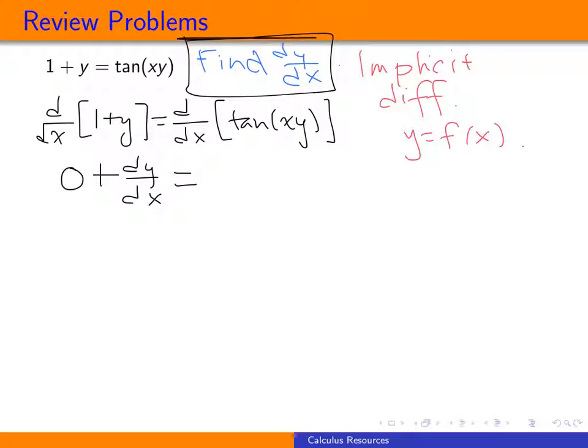So that'll be equal to, now when we go to do this right-hand side, there's quite a bit going on. So first, I see I have a tangent, and that's being of x times y. So what I'm going to do is start with the chain rule. So we'll take the derivative of the tangent, which I know is secant squared. And we're going to leave that inside function the same, which is x times y. Now, we have to finish out our chain rule. So we have to take the derivative of the inside function.